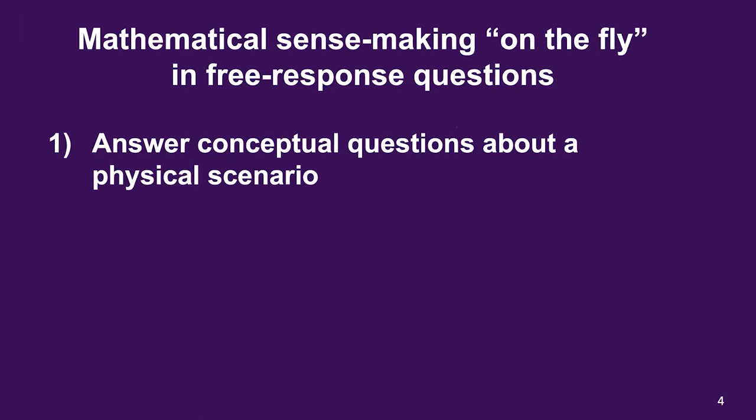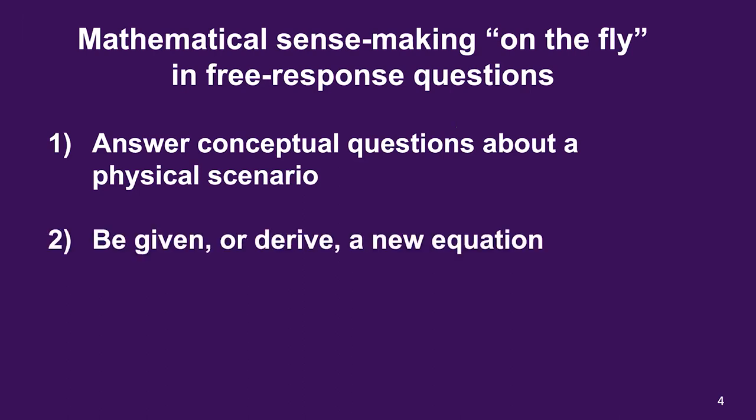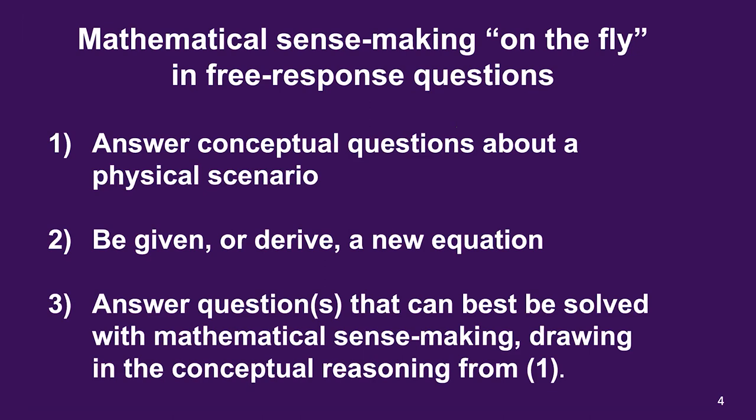A typical free response question that requires mathematical sensemaking — and it's most commonly problem number three on the old AP Physics 1 exams — is one where the problem will first ask you some conceptual questions about a physical scenario, maybe parts A and B. Then, maybe in part C, you'll be given or derive a new equation you maybe haven't seen before, and then answer questions involving that equation — questions best solved using mathematical sensemaking, drawing on the conceptual reasoning from earlier parts.